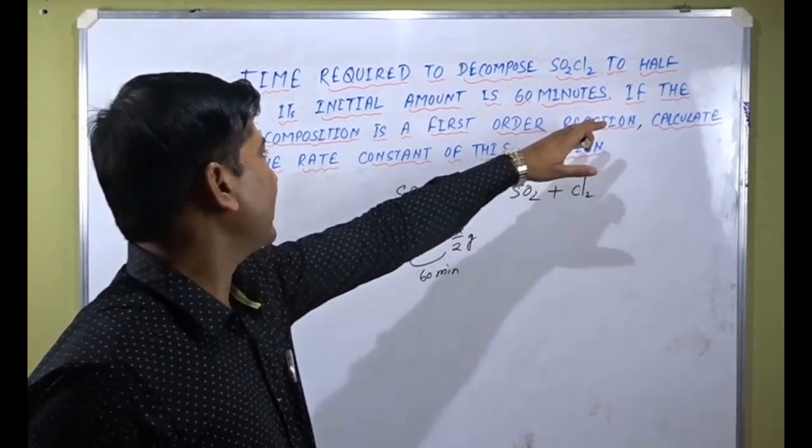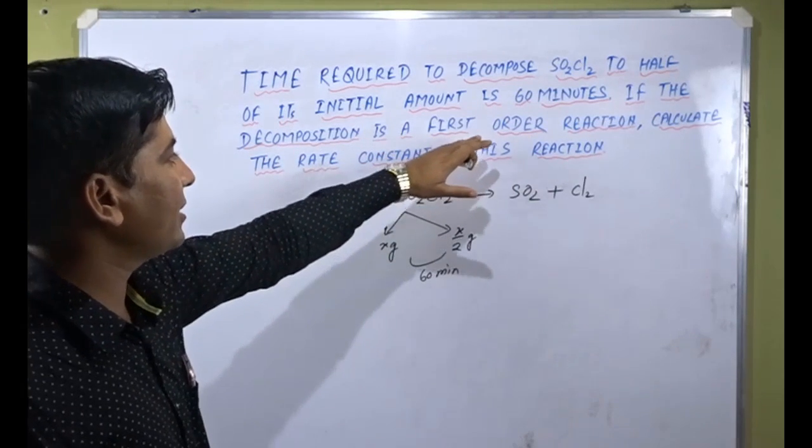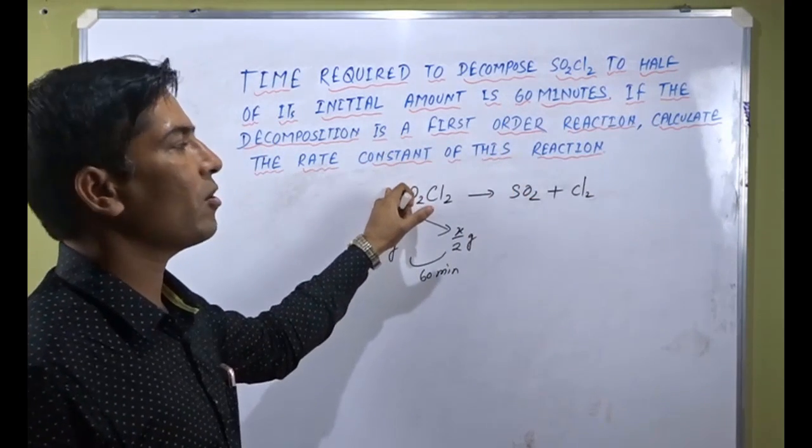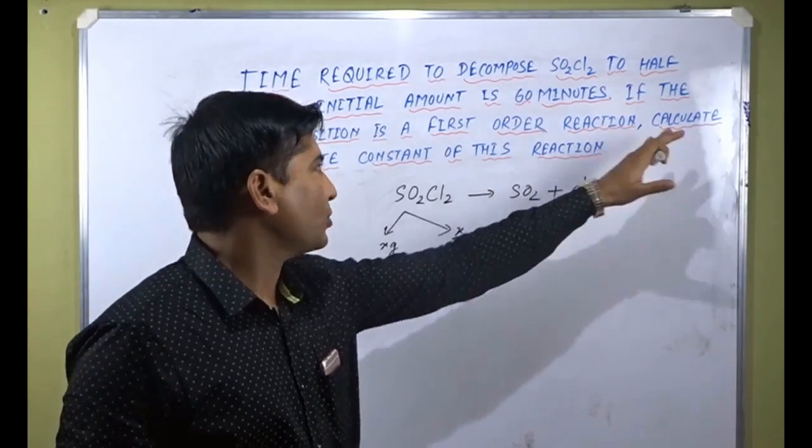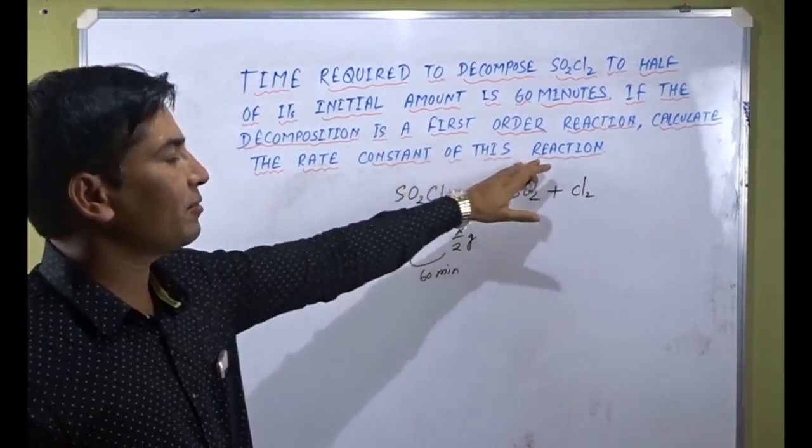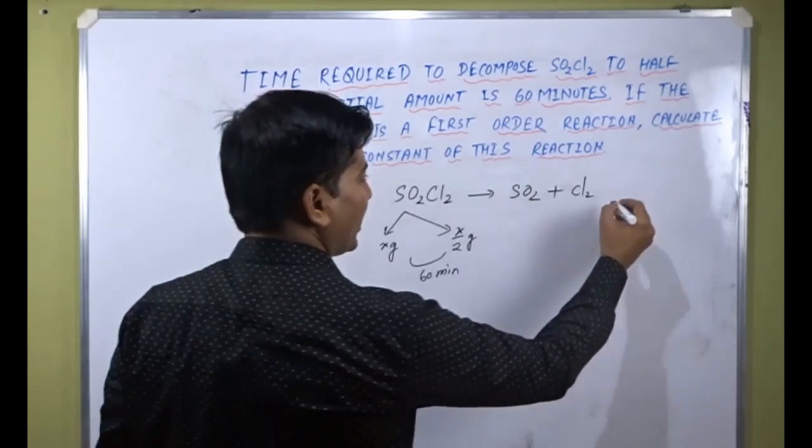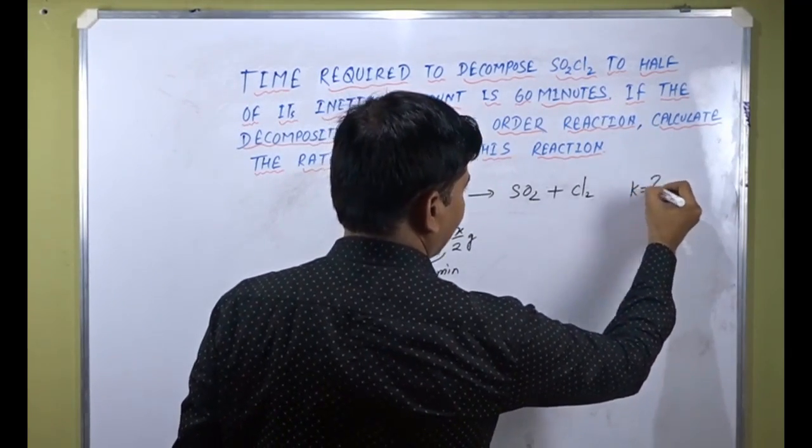Now the question further says that if the decomposition is a first order reaction, there is one coefficient, it is a first order reaction. The question asks to calculate the rate constant of this reaction. Rate constant means we have to calculate K. K is unknown.